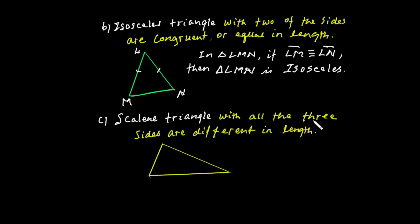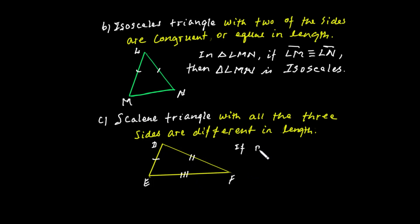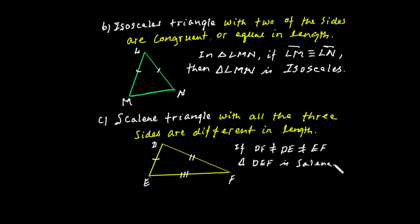A scalene triangle has all three sides of different lengths. For example, in triangle DEF, if DF is not equal to DE and DE is not equal to EF, then triangle DEF is a scalene triangle.